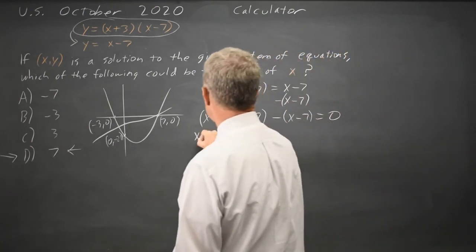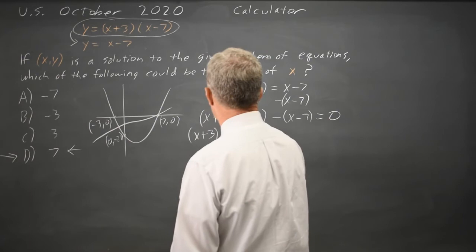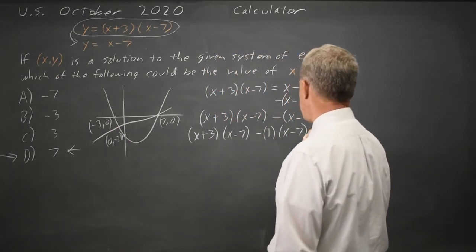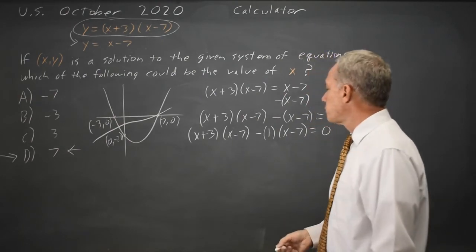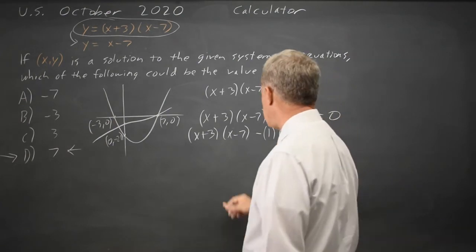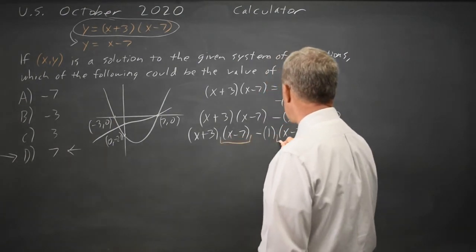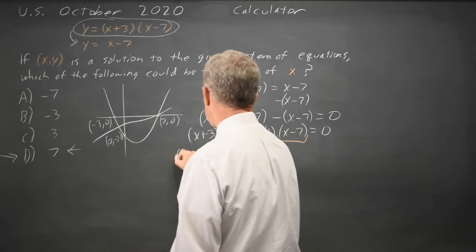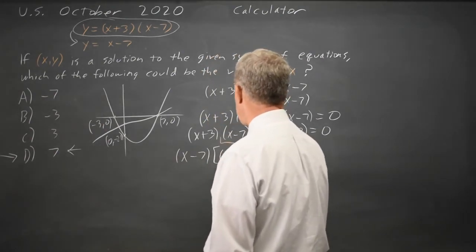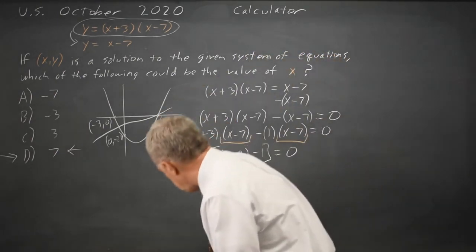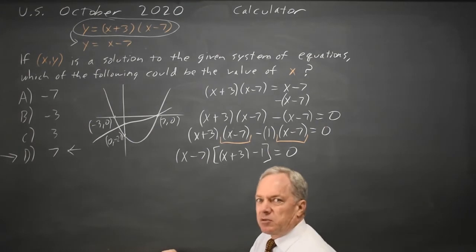I have x plus 3, x minus 7, minus 1, x minus 7, equals 0. So I'm going to factor out the common factor of x minus 7, and I get x minus 7 times x plus 3 minus 1 equals 0.